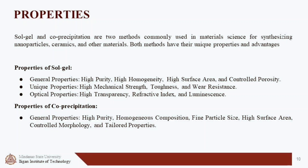The sol-gel method is a technique used for preparing advanced ceramic materials with unique properties. The properties of these ceramic materials depend on factors such as the precursor, processing conditions, and post-treatment. The sol-gel method produces ceramic materials with high purity, homogeneity, surface area, and controlled porosity. It also allows for tailoring of the microstructure to achieve properties such as high mechanical strength and enhanced optical properties, making it a powerful and versatile technique for producing advanced ceramic materials for a wide range of applications.